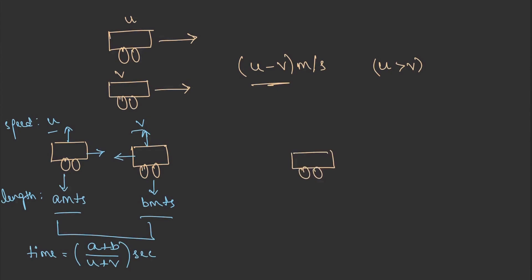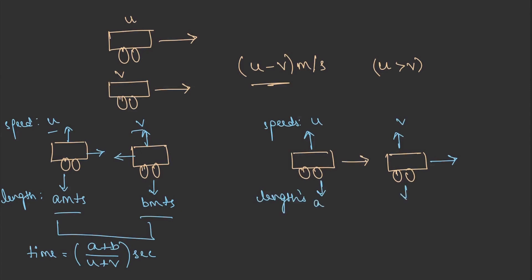If the trains are travelling in the same direction with speeds U and V and lengths A and B, then the time taken will be (A + B) divided by (U − V). With this, we are done with the formulas on problems on trains.